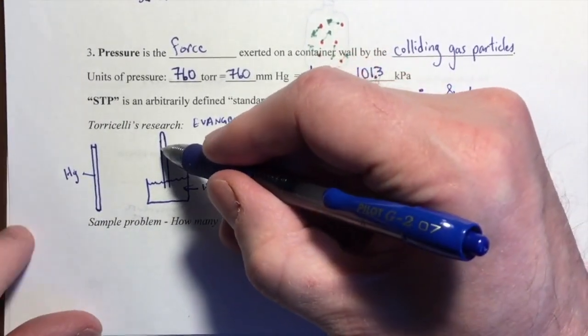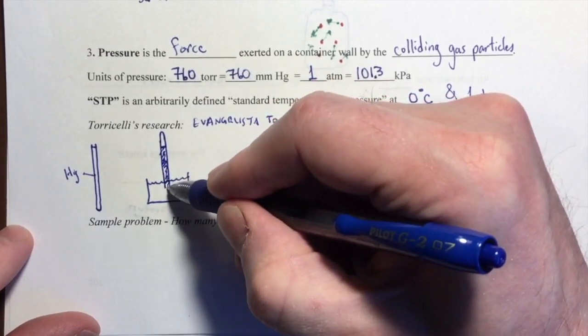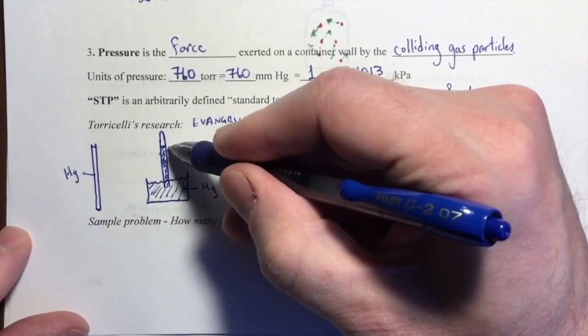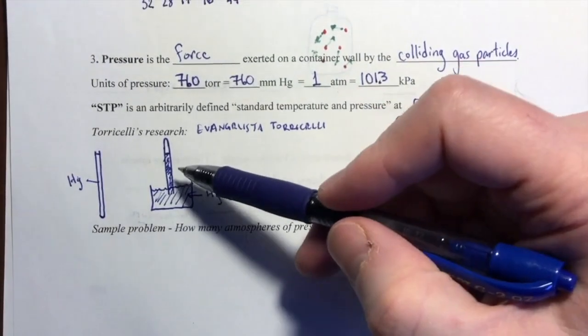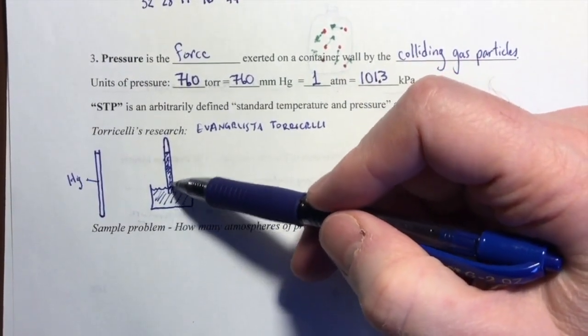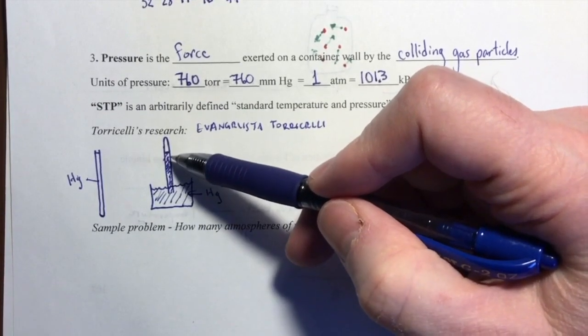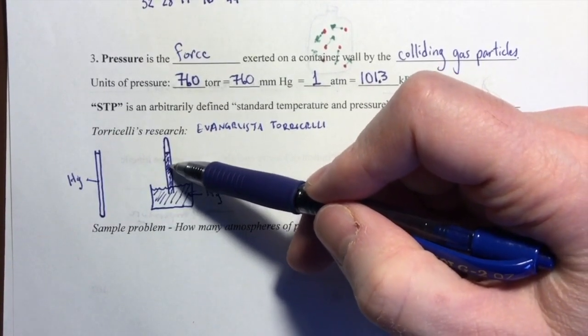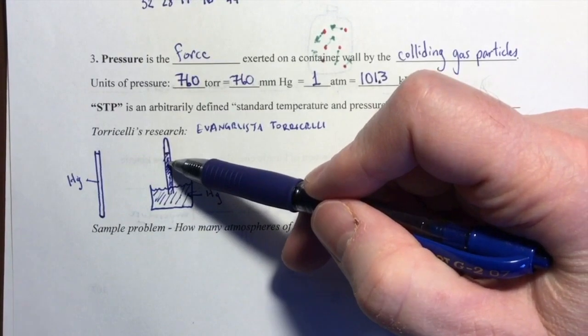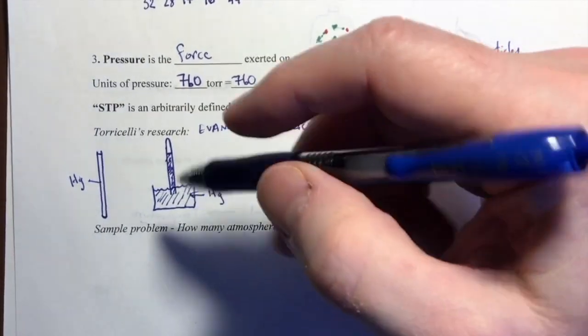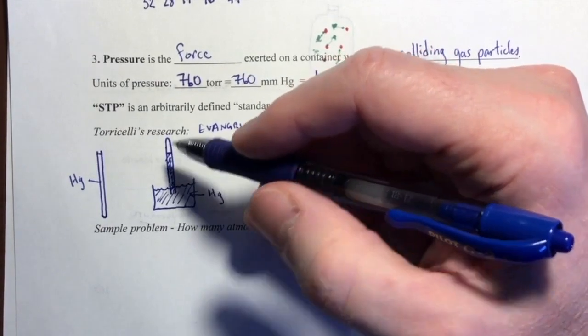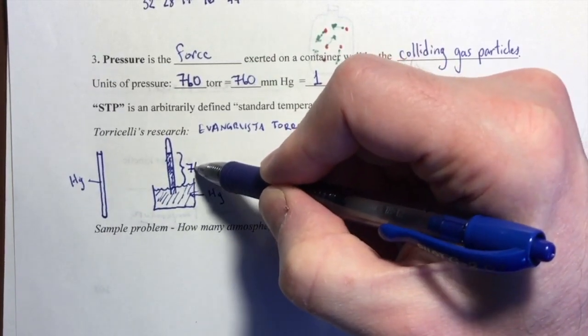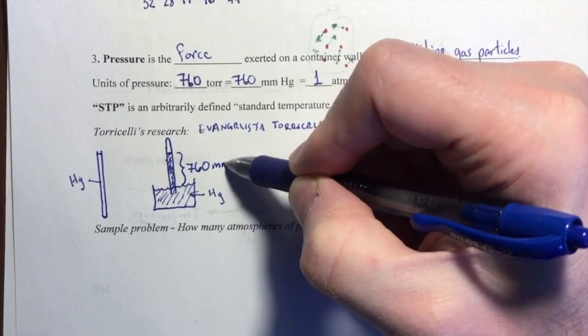That's what Torricelli found. He found that some of the mercury drained out of this tube but a lot of it remained in the tube. This was not news, not some brand new observation. But what Torricelli did was he ran this experiment many times using different heights of the tube, using different diameters of the tubing, and what he found was where he was working, the height of the mercury that was left in the tube was 760 millimeters tall.